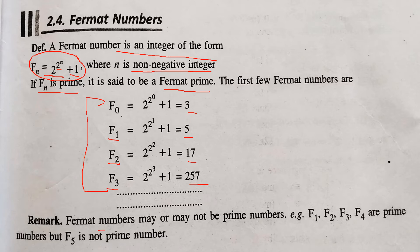Fermat Numbers may or may not be prime numbers. It may be a composite number. Here, f5 is not a prime number. First 4 numbers, f1, f2, f3, f4 are prime numbers. But f5 is not a prime number.